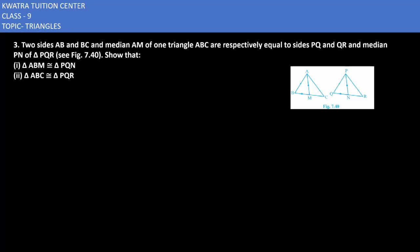Let's start with the third one. It says two sides AB and BC and median AM of one triangle ABC are respectively equal to sides PQ and QR and median PN of triangle PQR. So we need to show that triangle ABM is congruent with PQN and ABC is congruent with PQR.